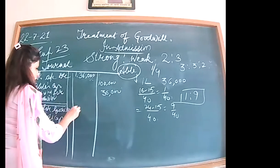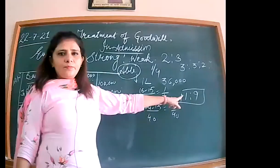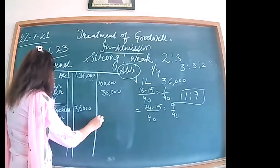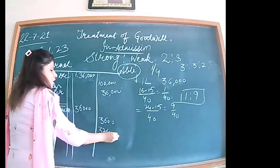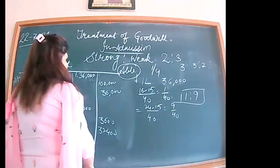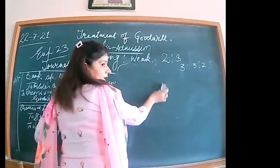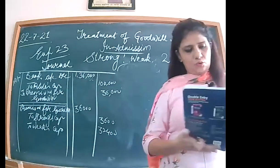The premium for goodwill is divided in the sacrificing ratio of 1 is to 9, so the split is 1/10 and 9/10. We have divided the goodwill between the sacrificing partners. Now reading the last line of the illustration — this is the new thing, the third topic under treatment of goodwill: Strong and Weak withdraw the premium for goodwill, meaning they are not keeping that money in the business.